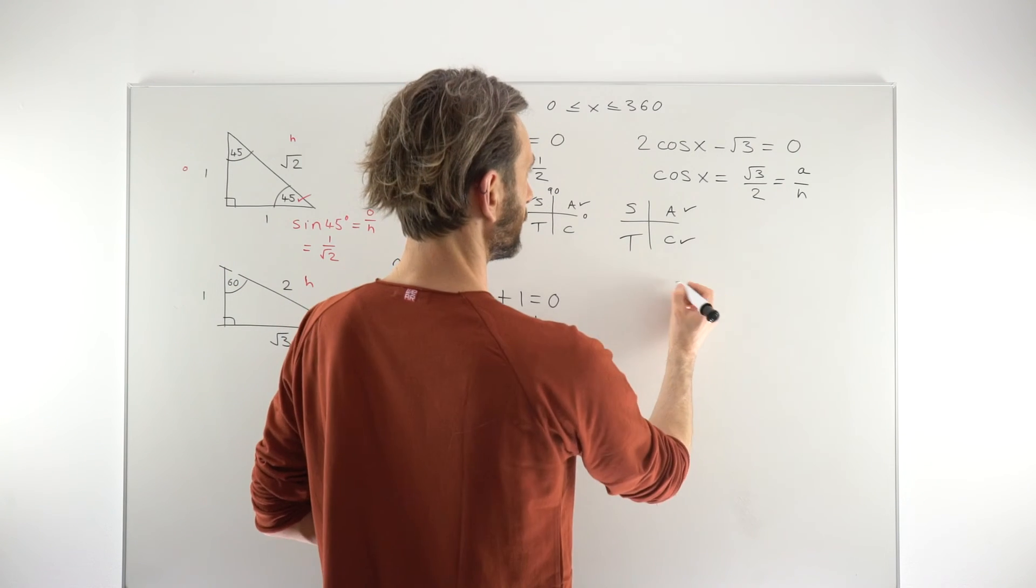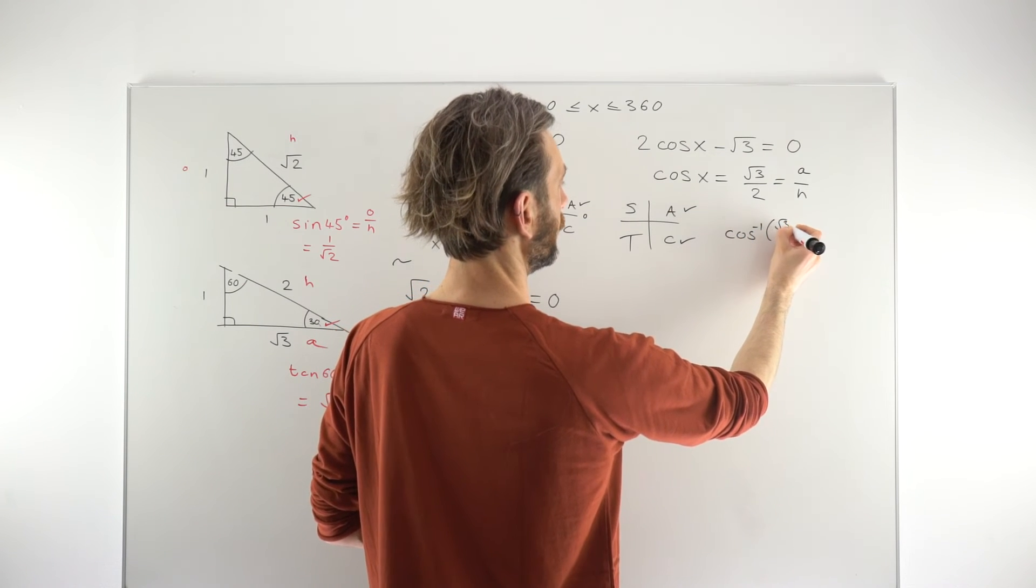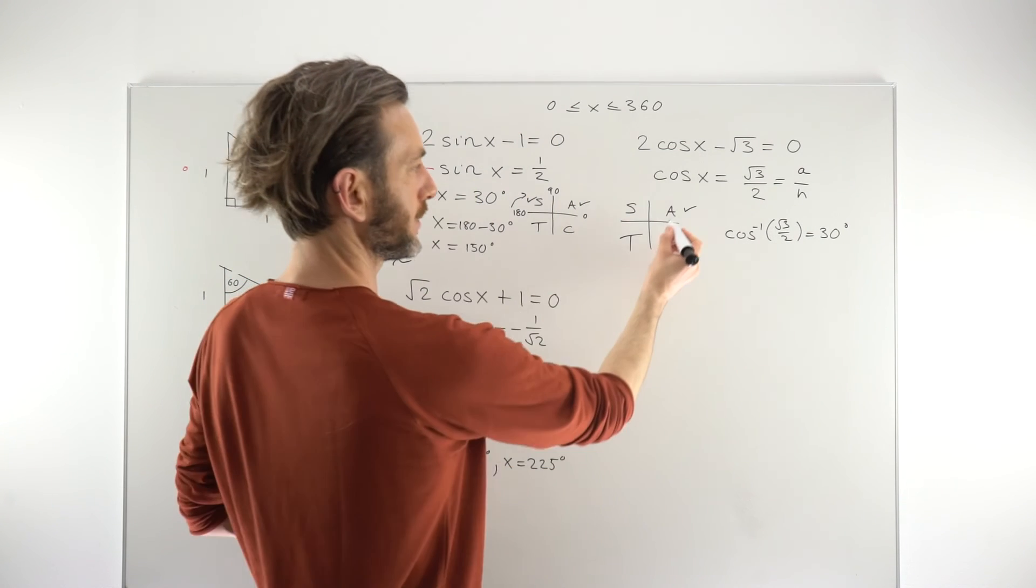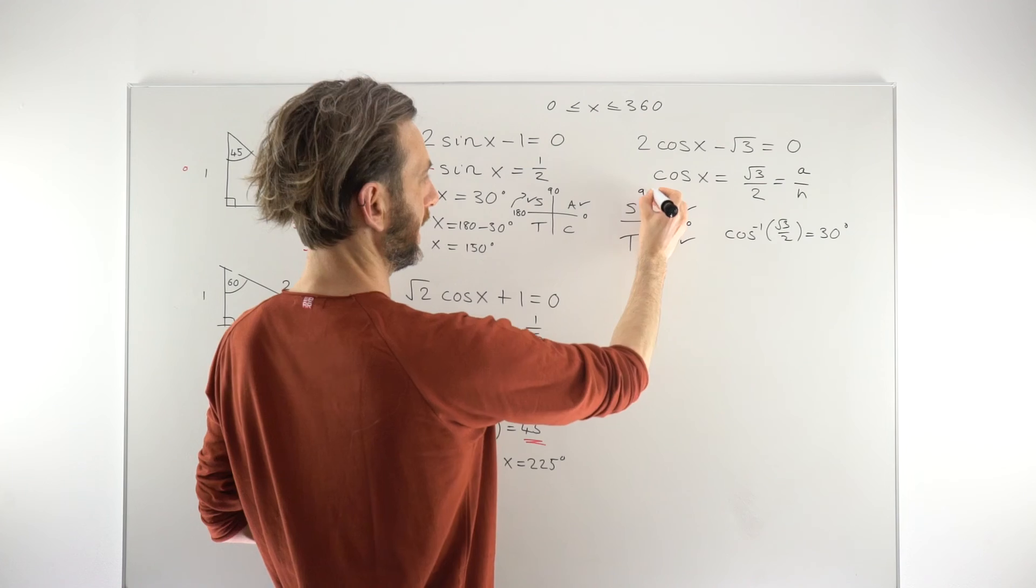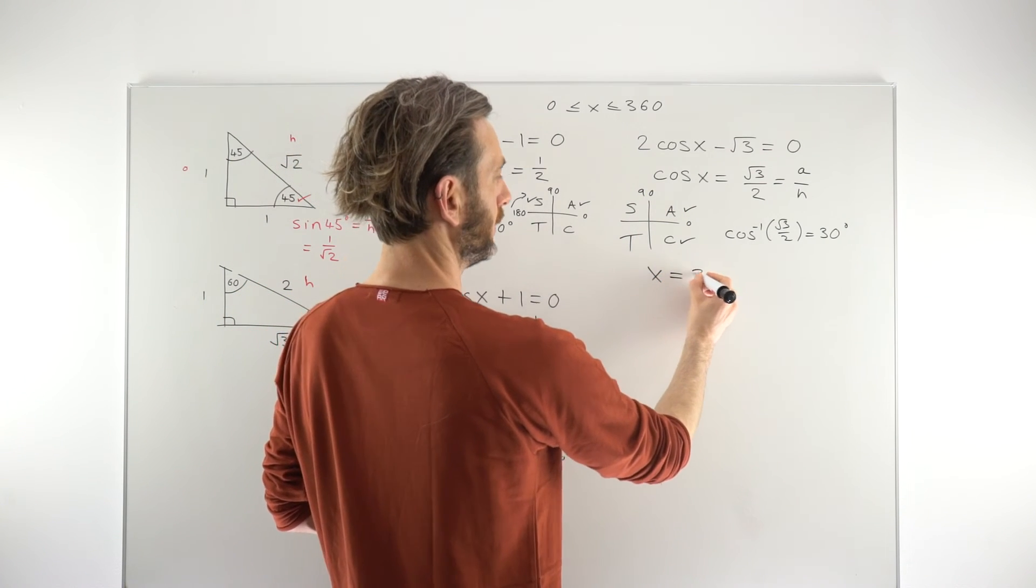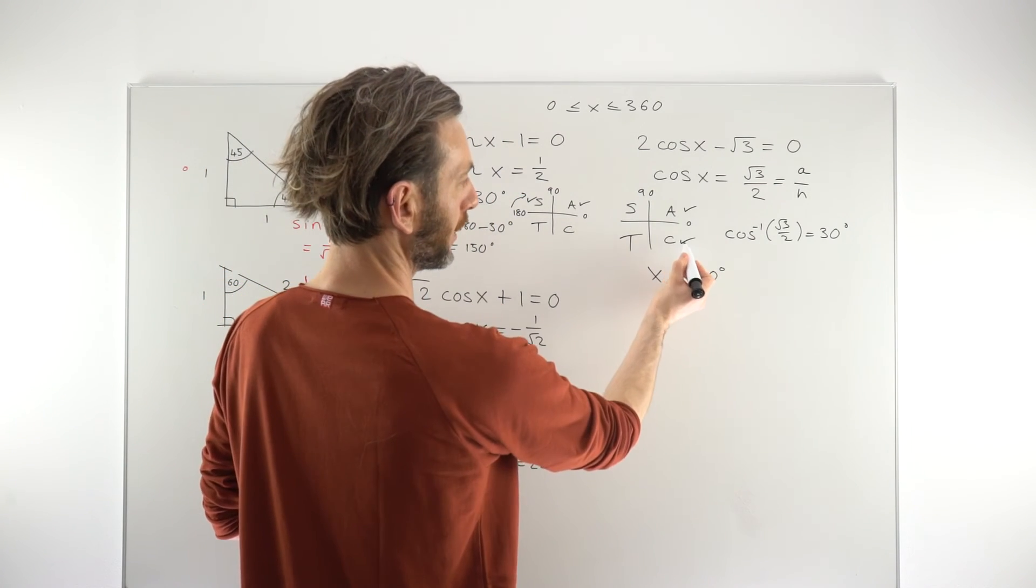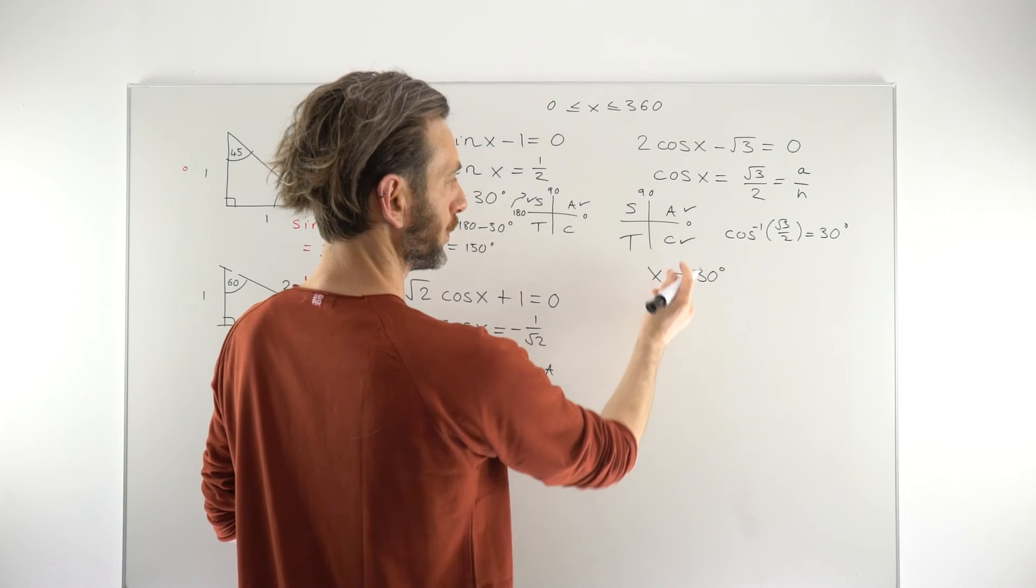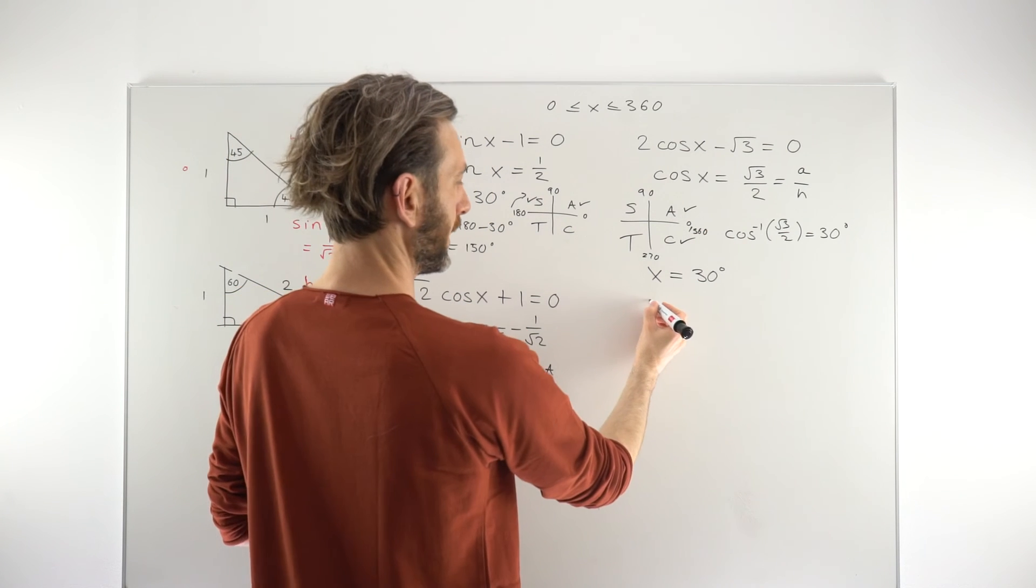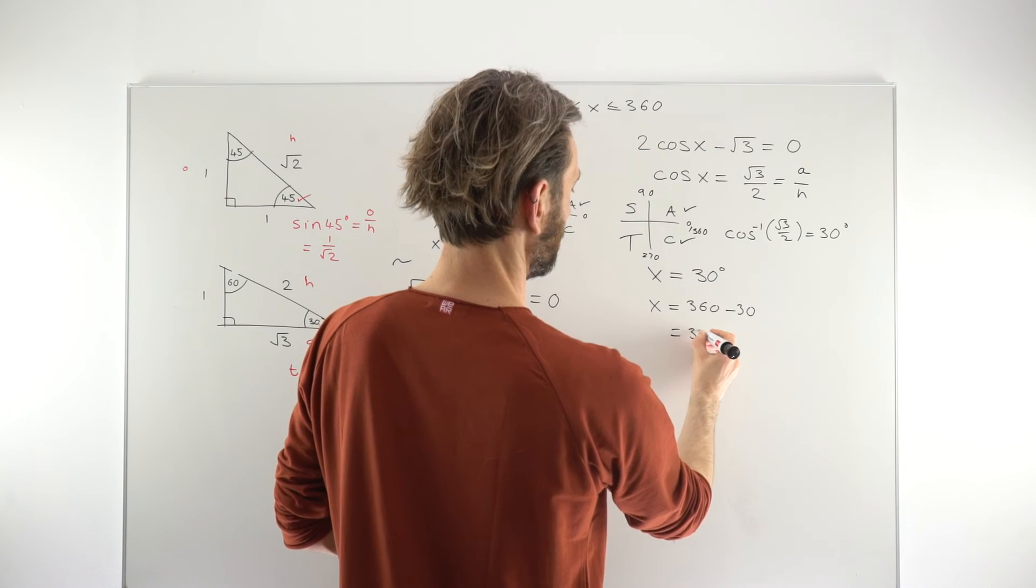So, that tells us that 30 satisfies that equation. So, the cosine inverse of root 3 over 2 is 30 degrees. Checking our cast diagram, 30 degrees is where one of our checks have been put. So, in other words, the one in the A quadrant, 0 to 90. So, that tells us that 30 degrees will be a valid solution for x. The second one we get by reference to the second checked quadrant, which is the one between 270 and 360 degrees. So, we get that by doing x equals 360 minus 30, which is 330 degrees.